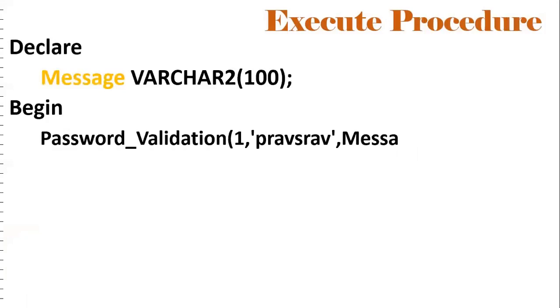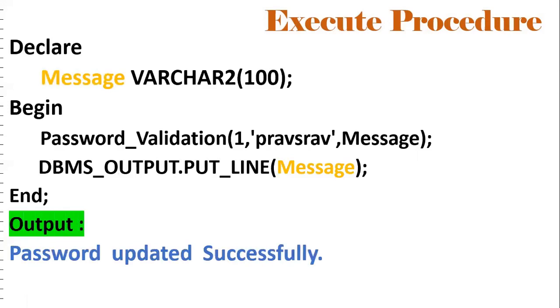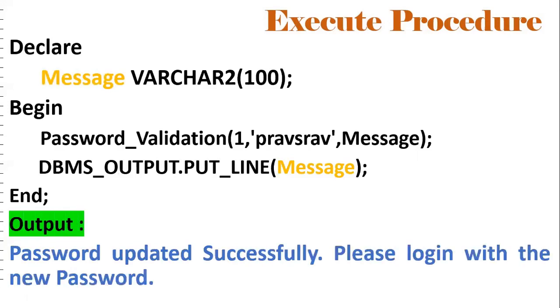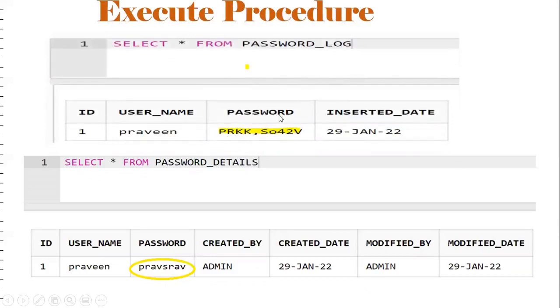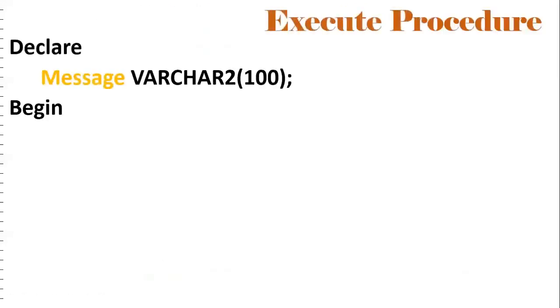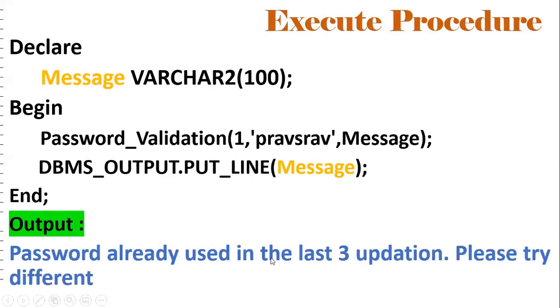To execute the procedure using an anonymous block, it takes two input parameters — user_id and password — and message as the OUT parameter. Displaying the result with DBMS_OUTPUT shows 'Password updated successfully. Please login with the new password.' Selecting from password_log shows the history record was stored. If you try to update again with the same password, it throws: 'Password already used in the last three updates. Please try a different one.'